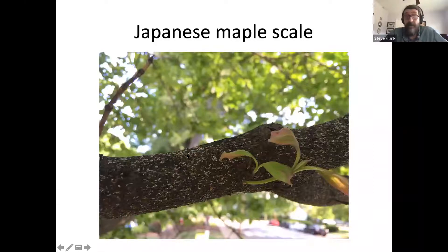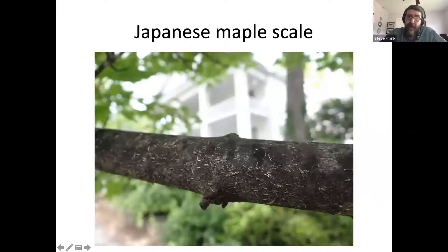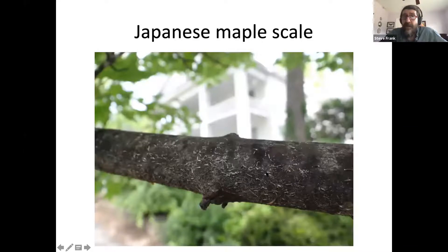This is a dogwood near the kids' school and you can see how densely it's covered with these white flecks. Here's a maple branch with Japanese maple scales on it. They're really a brown color, but the test is covered with a powdery white wax, so they look white — if you rub those scales gently with your finger, you'll see they're brown underneath.